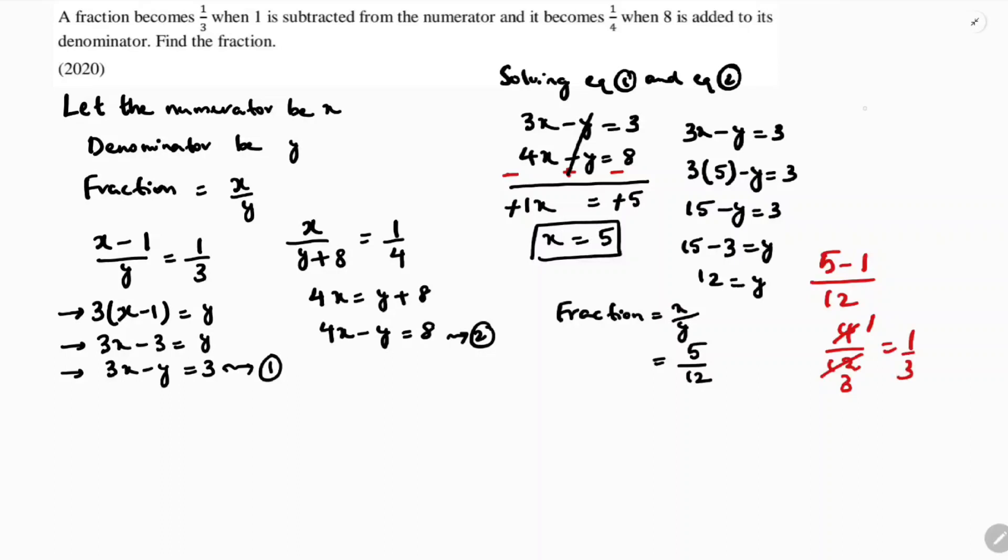And it becomes 1 by 4 when 8 is added to the denominator. 5 by 12 plus 8, 5 by 20. 5 times 1, 5 times 4, so it will become 1 by 4.